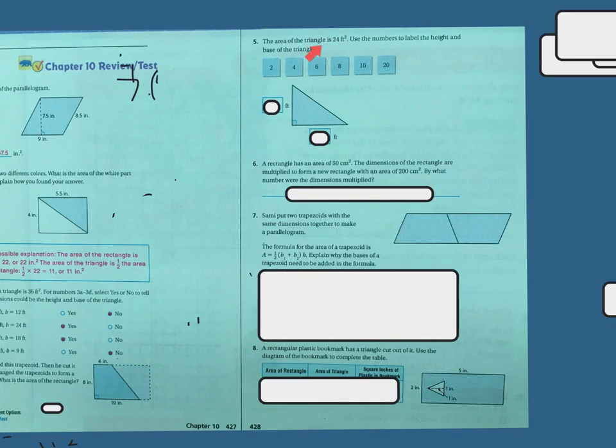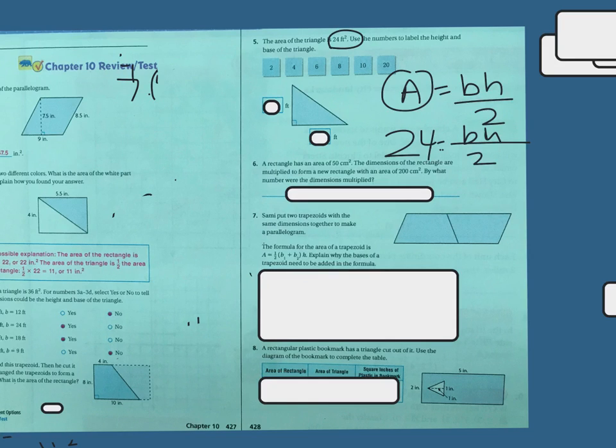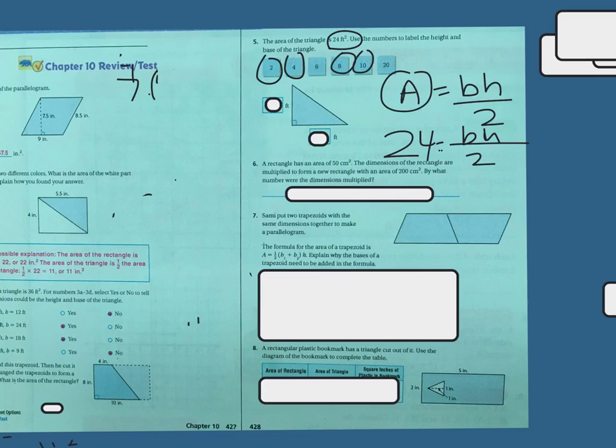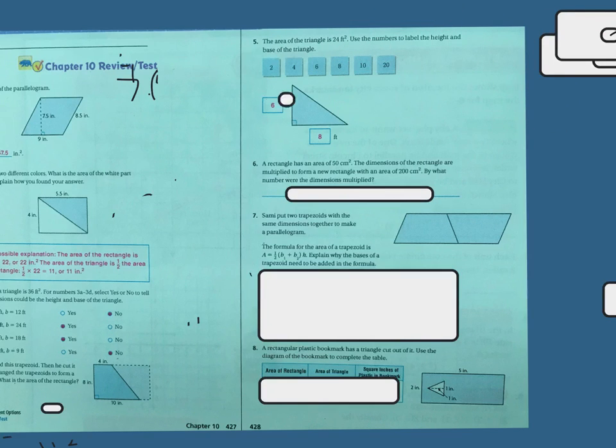Number 5. The area of the triangle is 24 feet squared. Use the numbers to label the height and the base of the triangle. Well, if the area is 24 feet, work backwards. Area equals base times height divided by 2. So I have to find something that has the base and the height divided by 2 that's going to give me 24. So we can just try in some numbers. Let's try 6 and 8. 6 times 8 is 48, and divided by 2 is 24. So that works. So my answer is going to be 6 and 8.